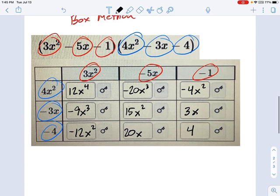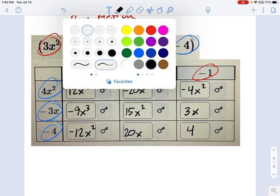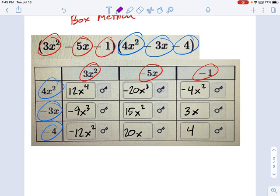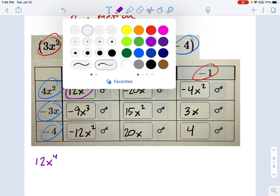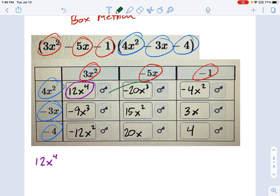So now what we do, once you've filled in the table, is you simply go through and you add up all the terms, all the like terms. And let's use purple for this. So I'm going to start with this guy, 12x to the fourth. And remember, these are like terms. So next we'll do these guys, the x cubes. So that's going to be minus 29x cubed.